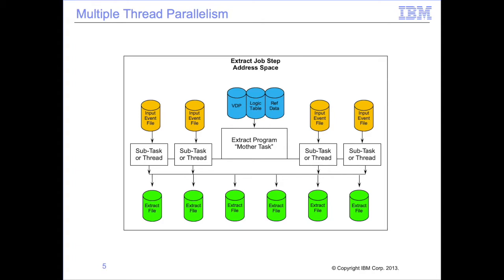In this example, the combination of views contained in the VDP and logic table requires reading data from four different event files. These views write output data to six different extract files. The main GBBMR95 program will generate four different subtasks corresponding to four different input event files to be read.